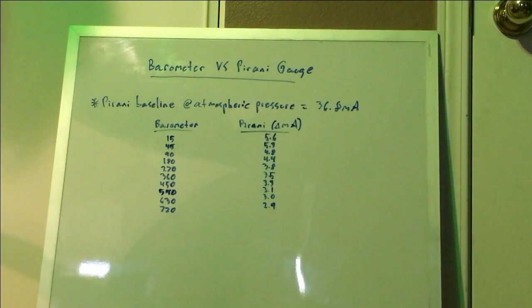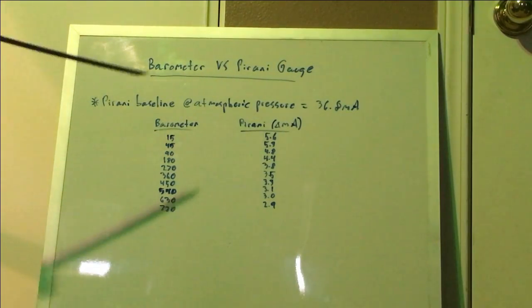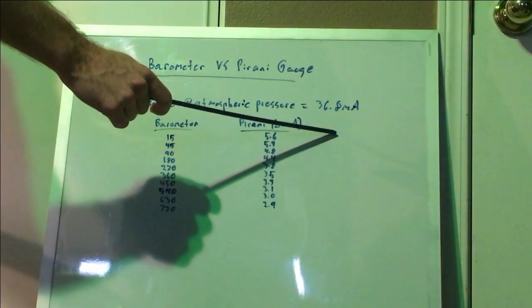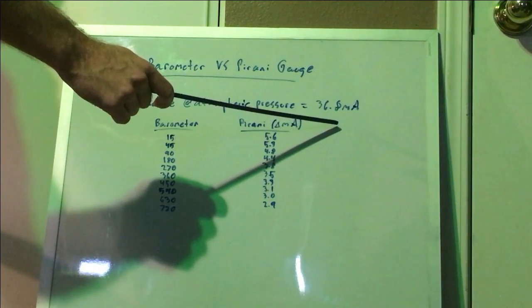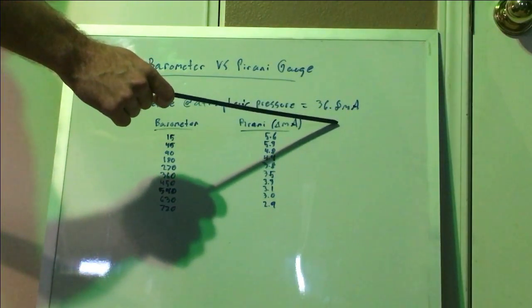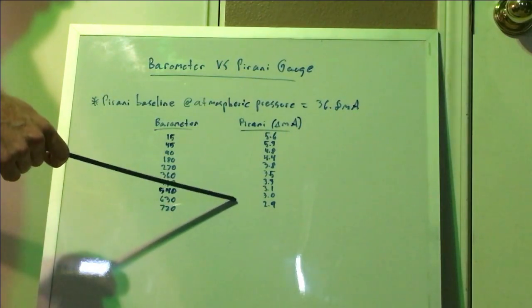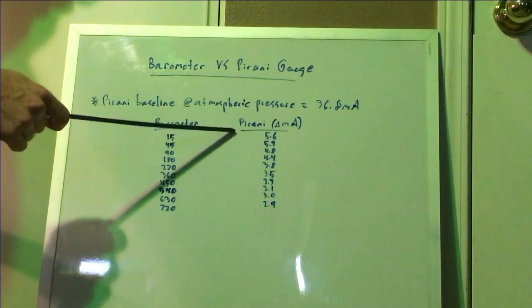So now that we have a second instrument that we can measure pressure with, that being the barometer, I thought it would be cool to actually compare the readings from both instruments, both simultaneously connected to the system, and see what that data looks like. So the first thing to look at here is the baseline reading on the Pirani gauge, and this will be the reading at STP, no vacuum at all. And you need to take note of that reading because further down the line when you're analyzing this data, what you need to record is the change in that reading.